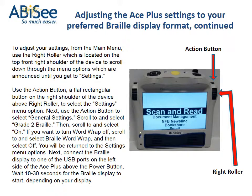To adjust your settings from the main menu, use the right roller, which is located on the top front right shoulder of the device, to scroll down through the menu options until you get to settings. Use the Action button — a flat rectangular button on the right shoulder of the device above the right roller — to select the Settings menu option. Next, use the Action button to select general settings.